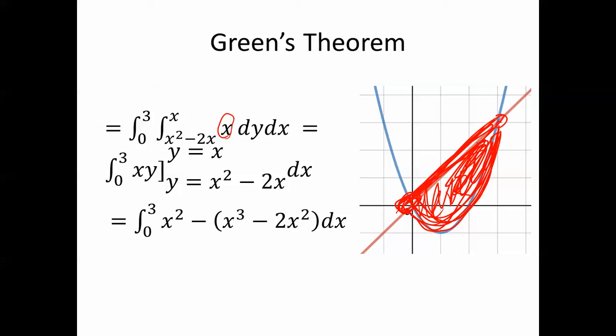Evaluate that by integrating first with respect to y, and get x times y, where y goes from x squared minus 2x to x. Plug in x and we get this, subtract what we get when we plug in x squared minus 2x. That's what we end up with.